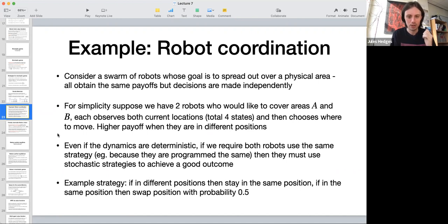Notice in this example, even if the dynamics is deterministic—let's say even if with probability one the robot successfully moves to the location that it chooses to move to—we can still be in a situation where stochastic strategies are required. Probability comes back.